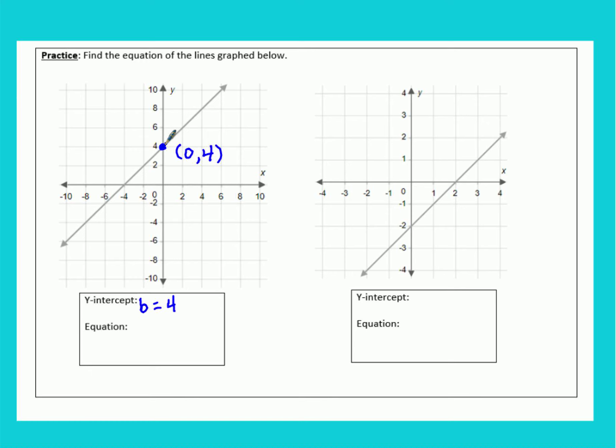Now our slope, let's just check. If we go up one box, that's up 2. And if we go over one box, that's over 2. So our slope is 2 over 2, which equals 1. So we can say that y equals x plus 4 is our equation.